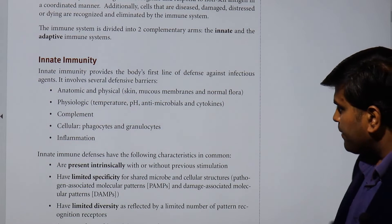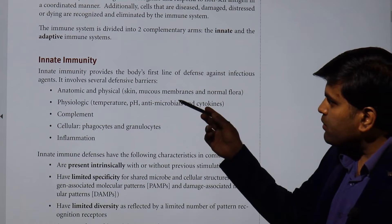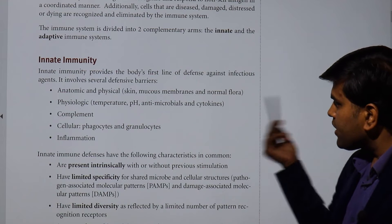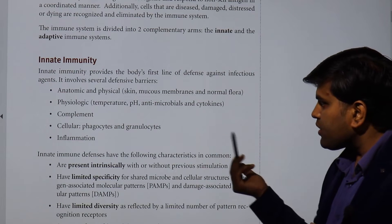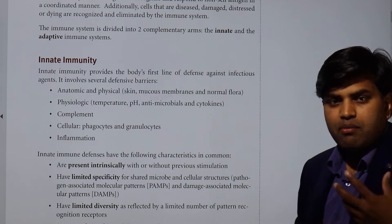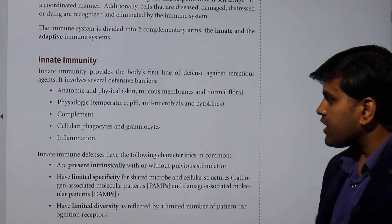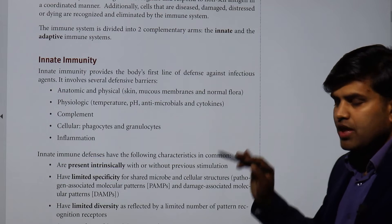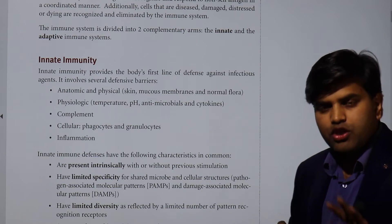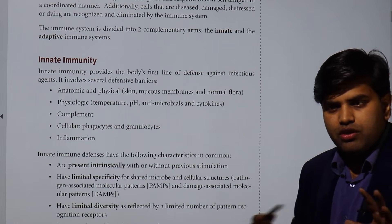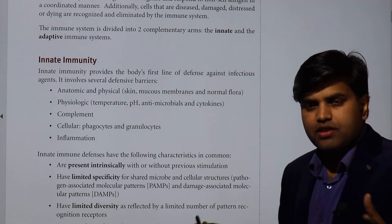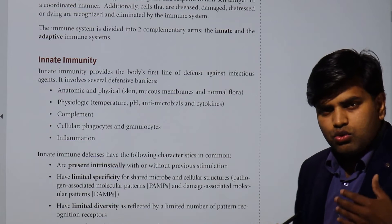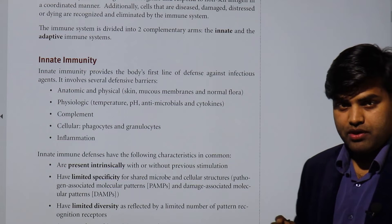There are other byproducts like C3b, which helps in opsonization and clearing of immune complexes. So the parts of innate immunity include: physical and anatomical barriers, physiological barriers such as temperature and pH, antimicrobials, cytokines, complement, and cells like neutrophils and macrophages — the cellular phagocytes, granulocytes, and inflammation. These do not amplify or change with different viruses, bacteria, or microbial invaders — they always remain the same.